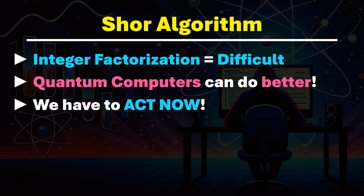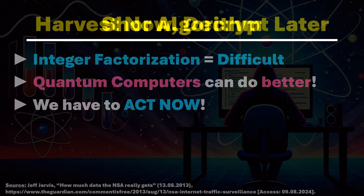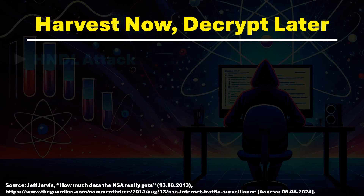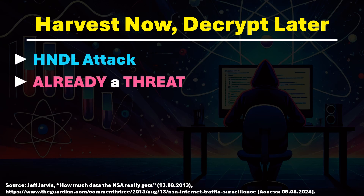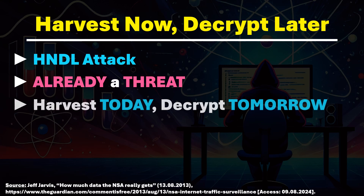How so? This is due to the attack vector known as Harvest Now, Decrypt Later. This is an already existing threat in the field of quantum cryptography, and refers to a strategy where encrypted data is collected today — harvest now — and decrypted later once powerful quantum computers are available.